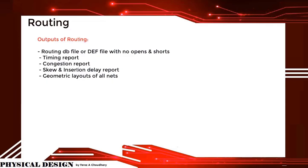The outputs of routing include: a routing DB file or DEF file with no opens and shorts, a timing report, a congestion report, a skew and insertion delay report, and geometry layouts of all nets.